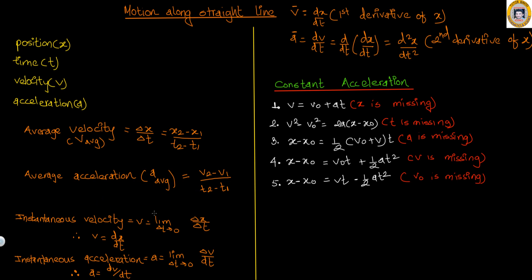The instantaneous velocity is the velocity at an infinitely small interval of time — delta t tends to zero. We will have the limit as delta t tends to zero of delta x over delta t, which is the definition of the derivative. So the instantaneous velocity is the first derivative of position, which is dx over dt.